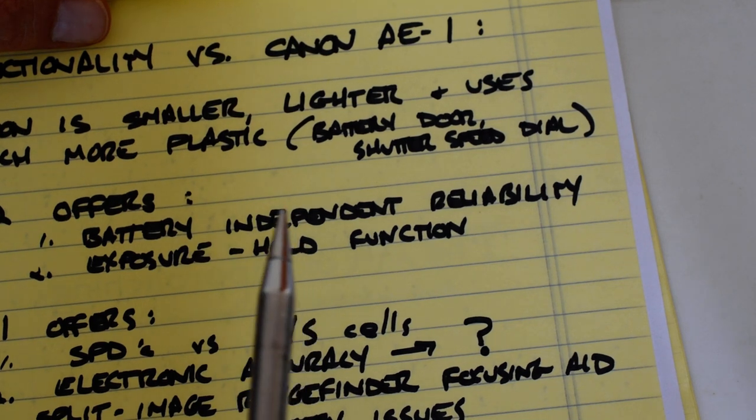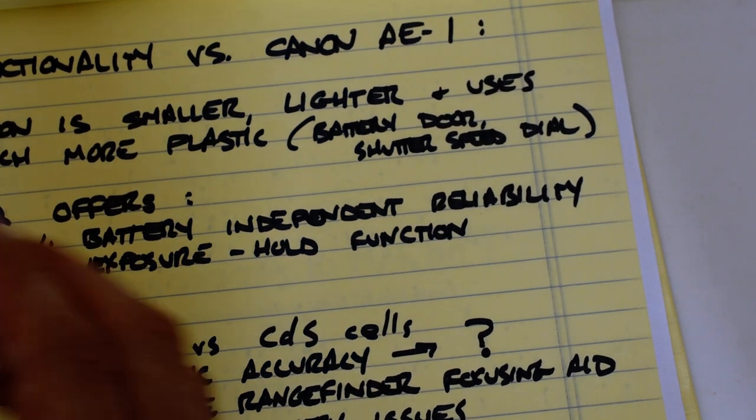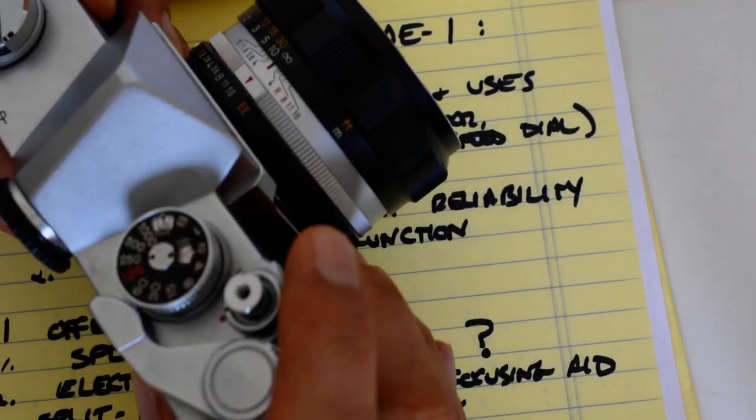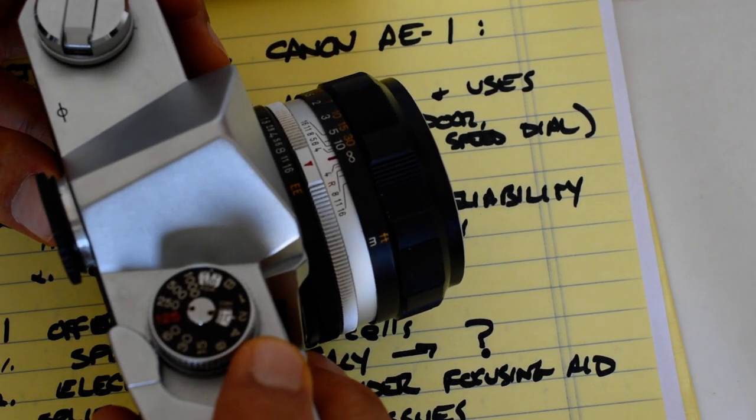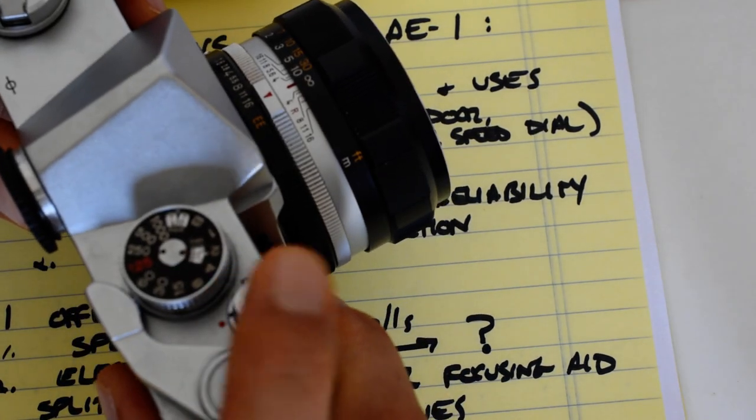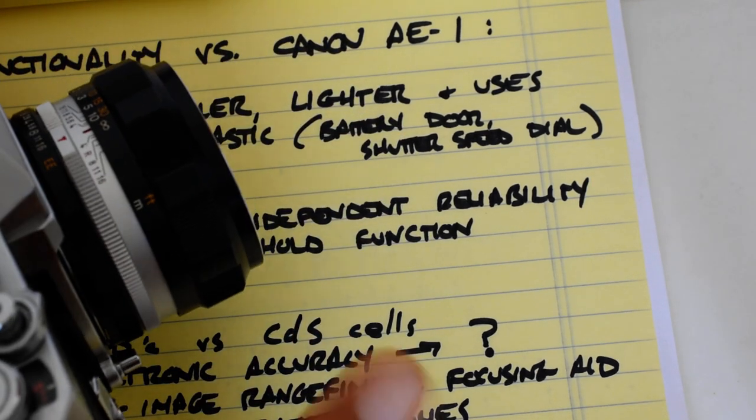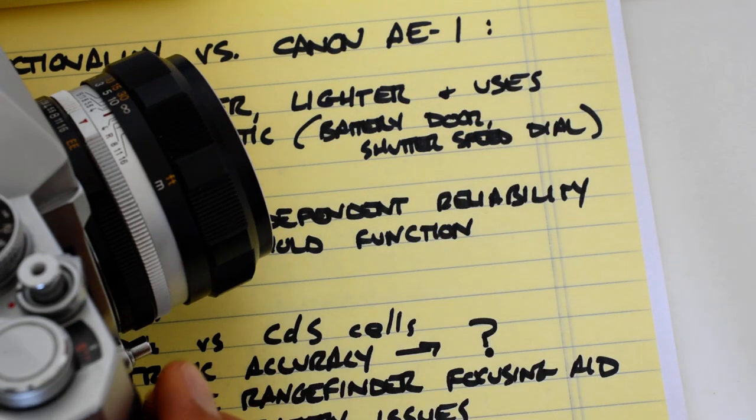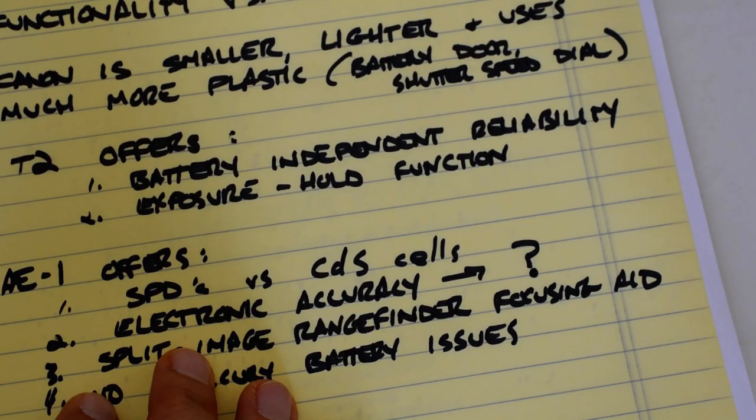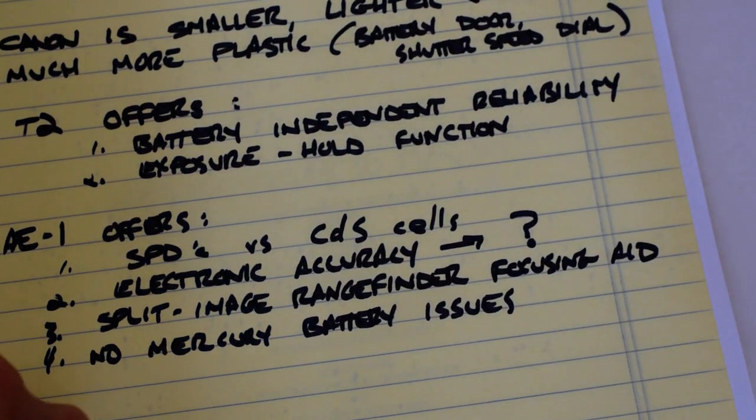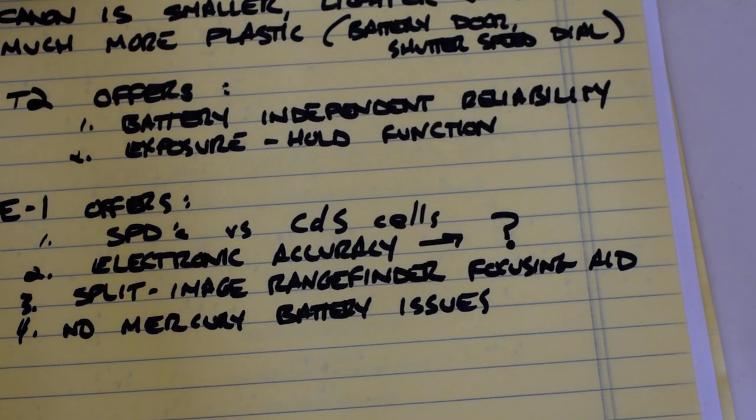So the T2 also offers an exposure hold function. The AE-1 does not. Now on the T2, if you get your meter reading you like, you do a half press on the shutter release, hold it, and then you can recompose and fire. When you do that half press, that's when that needle or that little mechanical arm is grabbing the needle, holding it stationary, and then you recompose and take your shot. The AE-1 does not offer an exposure hold function. It's a major drawback to a camera with an electronic shutter. I mean, what's the point of an electronic shutter without an exposure hold function really?